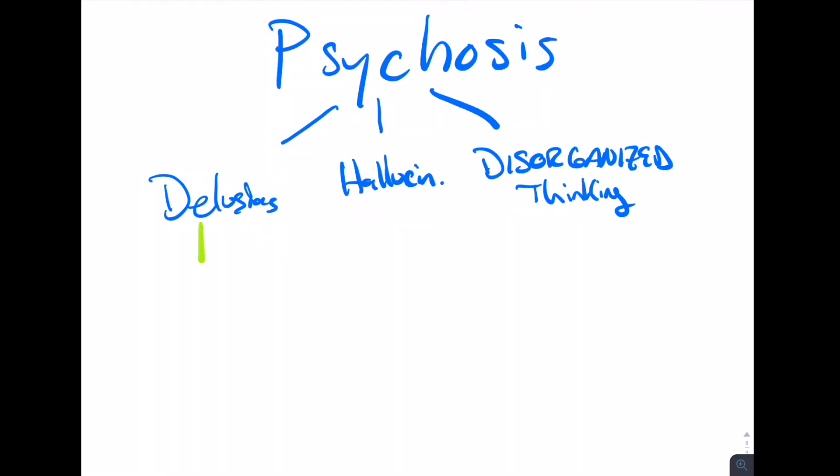You can also further break down delusions because there are a variety of different types. Things like delusions of grandiosity. You can have paranoid delusions like a belief that someone is chasing you like the cops or the FBI or the CIA. You can have ideas of reference. That's when you think that things in the external environment are uniquely related to you, like a TV show character is speaking directly to that person.